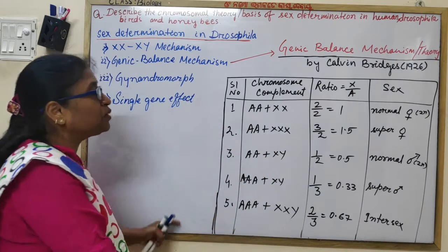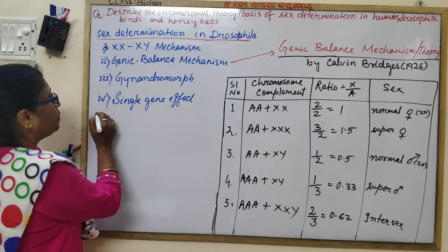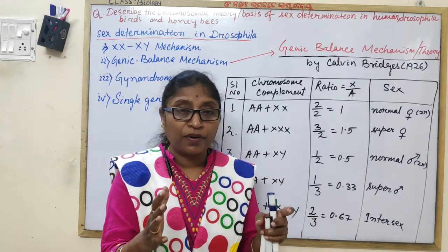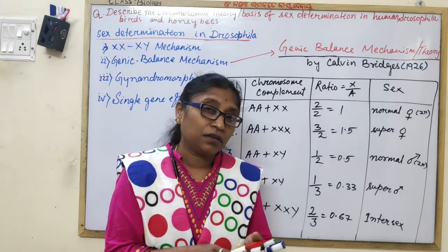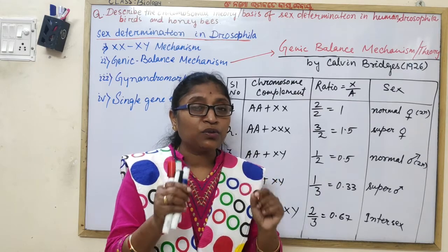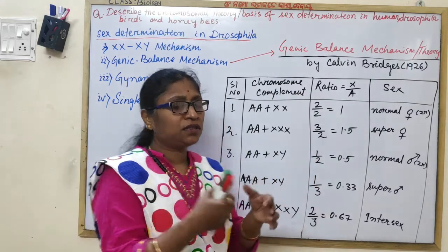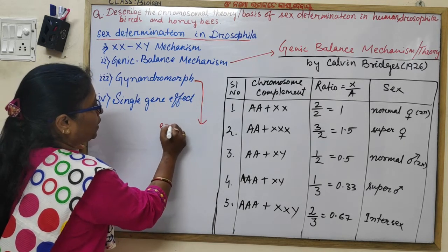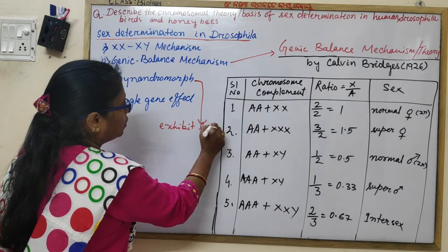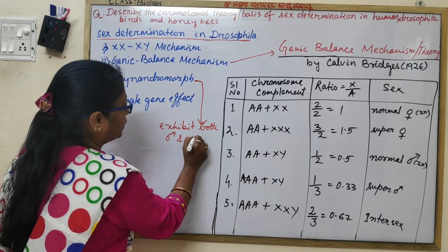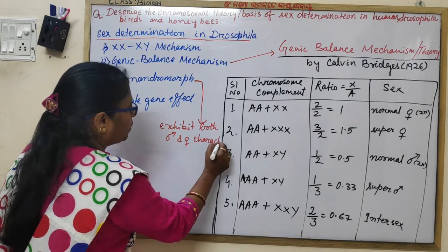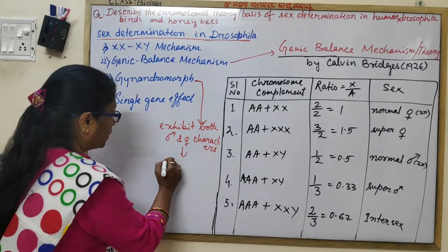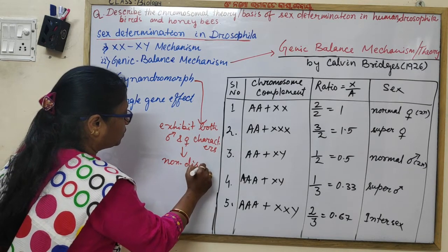Gynandromorph: a gynandromorph is an animal exhibiting both male and female tissues or characters. It occurs due to the non-disjunction of the X chromosome during early development.